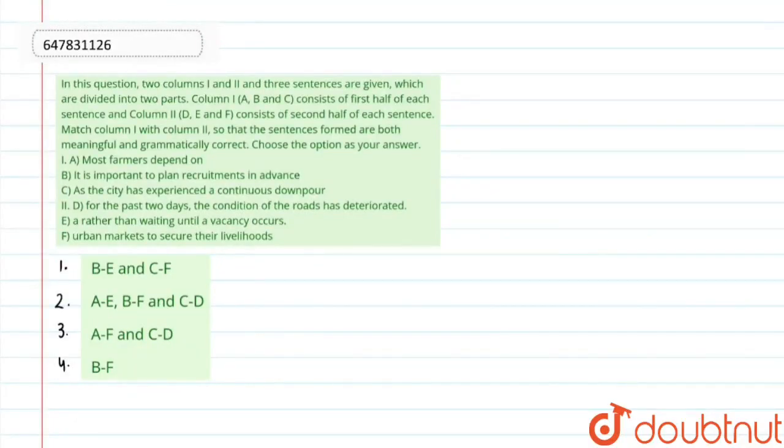Hello everybody. In this question, two columns and three sentences are given, which are divided into two parts. Column 1, which is A, B and C, consists of first half of each sentence and column 2, which is D, E and F, consists of second half of each sentence. Match column 1 with column 2 so that the sentences formed are both meaningful and grammatically correct. Choose the option as your answer.